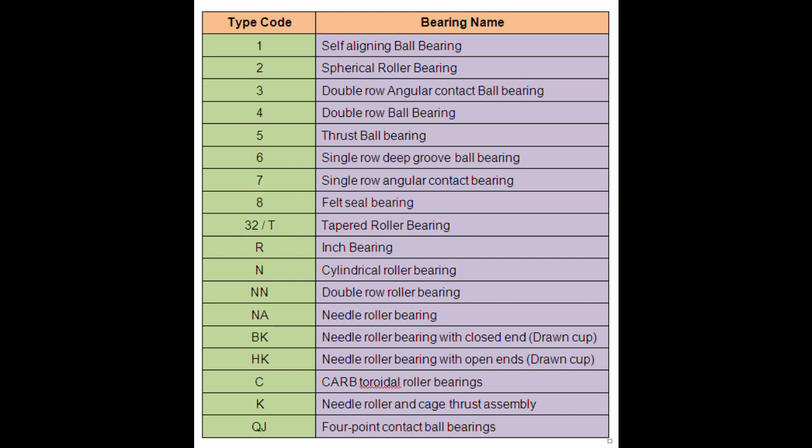After R, the size of the bearing will be given in inches. To understand it better, let's take an example of an inch bearing. Suppose we have an R43RS bearing. Here, R4 means it is an inch bearing whose bore size is given in inches.